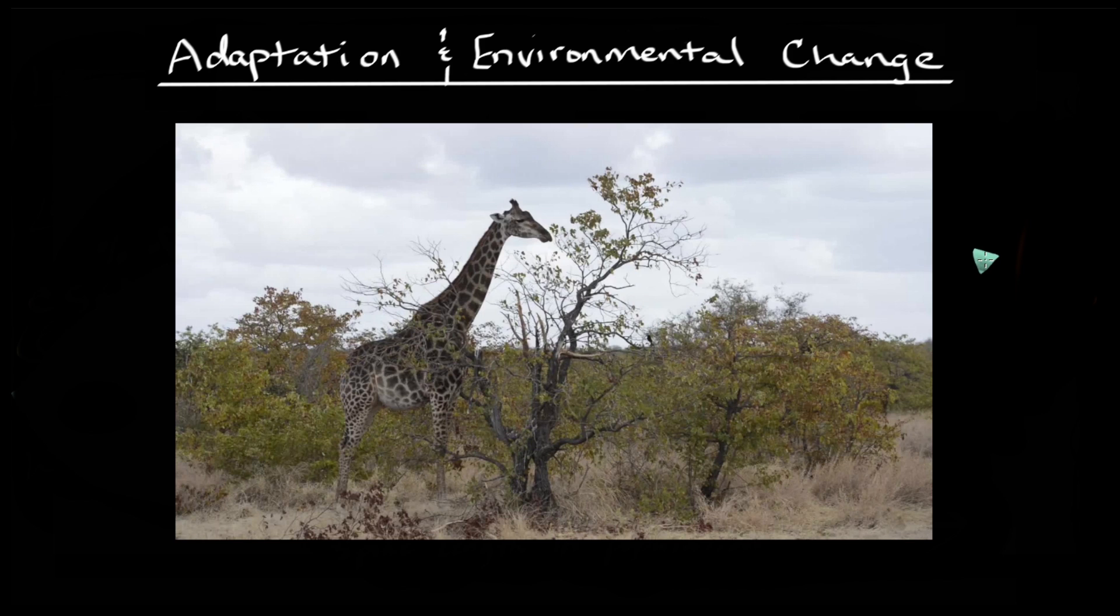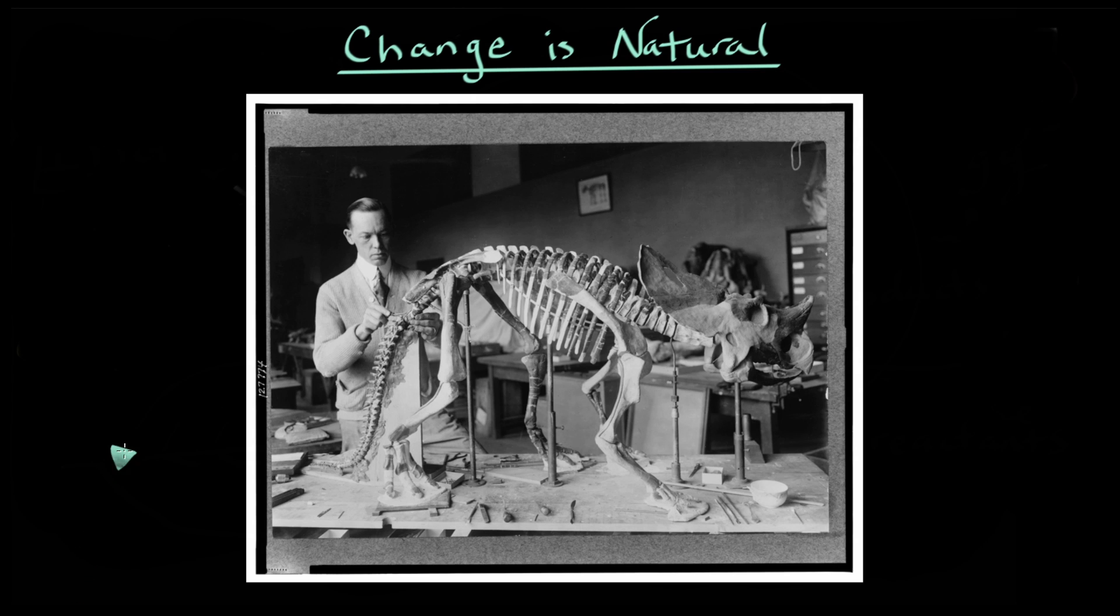But what happens when the environment, which forges a specific set of adaptations, no longer exists in that form? How do populations respond? Well, this happens to actually be a pretty common occurrence on Earth. I wouldn't be surprised if the saying, things change, was first coined by a paleontologist. Studying the history of life on Earth means you'd be well acquainted with the dogged persistence of change.